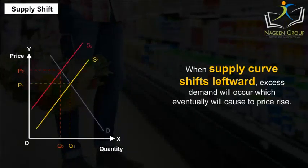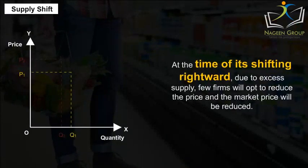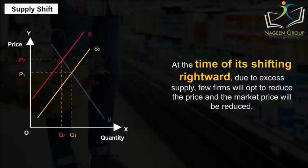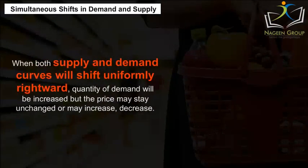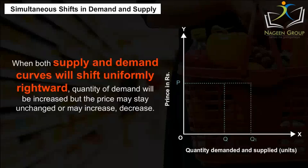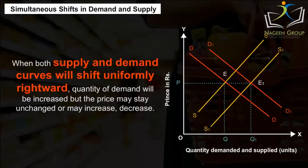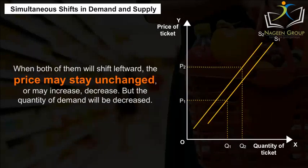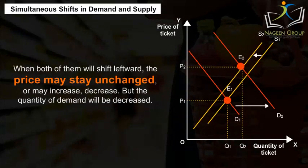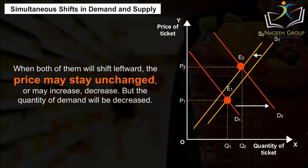Supply shift: When the supply curve shifts leftward, excess demand occurs, which eventually causes prices to rise. When it shifts rightward due to excess supply, some firms reduce the price and the market price falls. Simultaneous shifts: When both supply and demand curves shift uniformly rightward, the quantity demanded increases, but the price may stay unchanged, increase, or decrease. When both shift leftward, the price may stay unchanged, increase, or decrease, but the quantity demanded decreases.